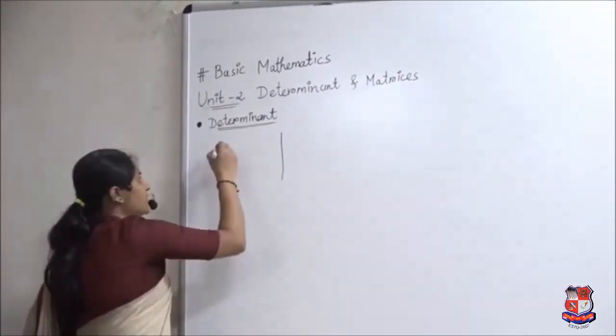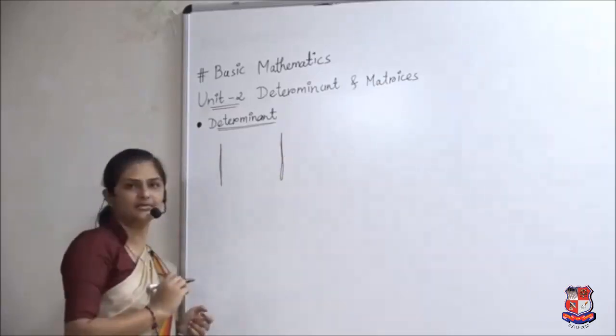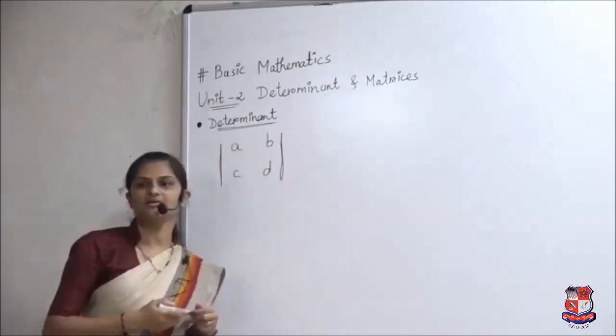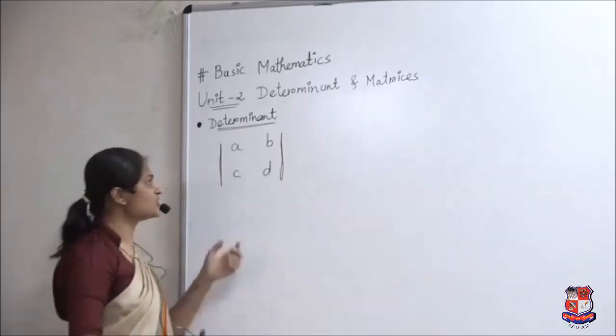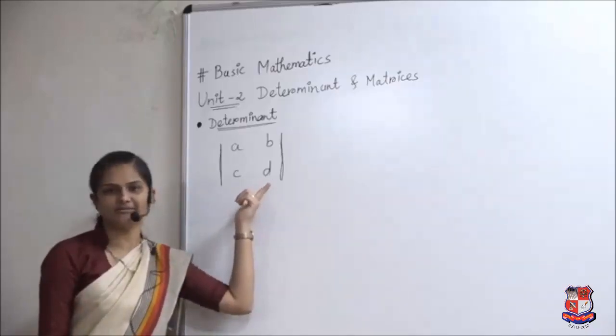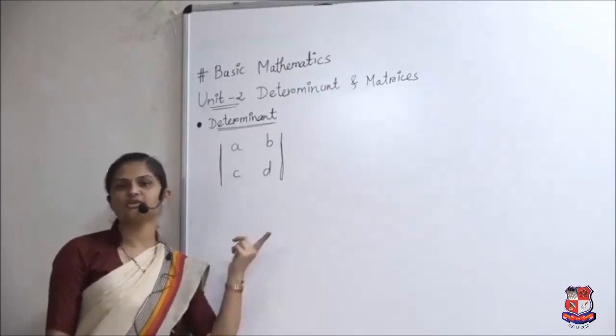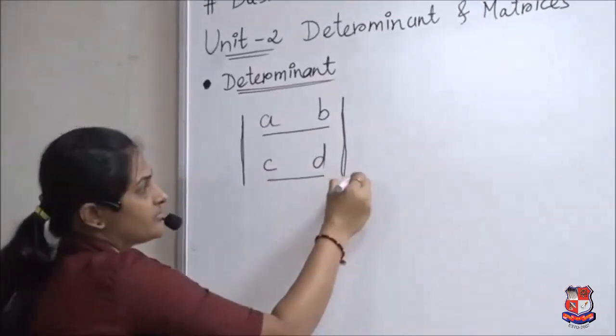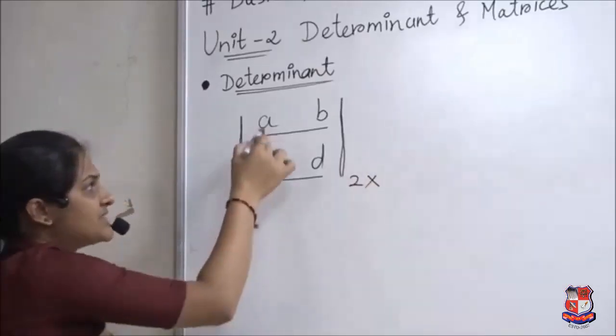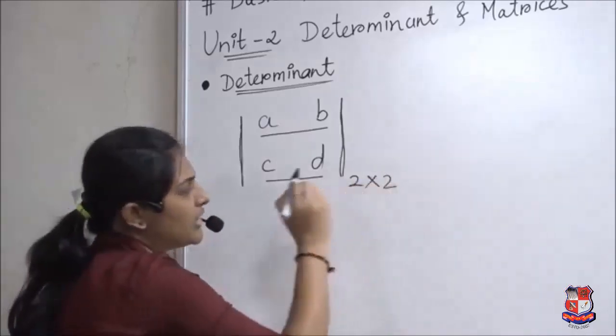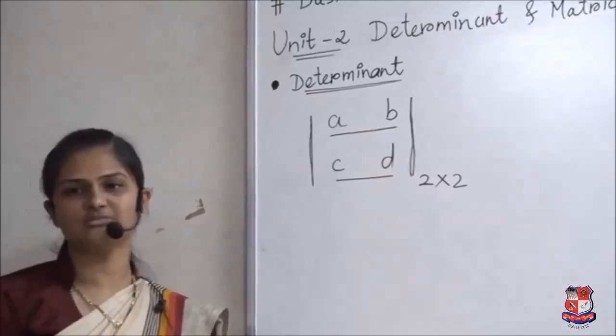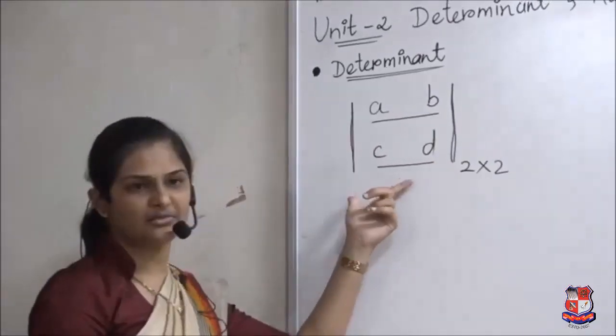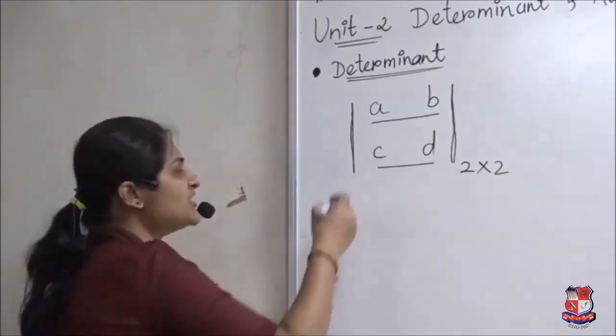There are two determinants. The determinant uses modulus symbol with four numbers arranged in a square. This is called 2 cross 2 determinant. It has 1st row AB, 2nd row CD - 2 rows and 2 columns. First column is AC and 2nd column is BD, so 2 rows and 2 columns makes it 2nd order determinant.